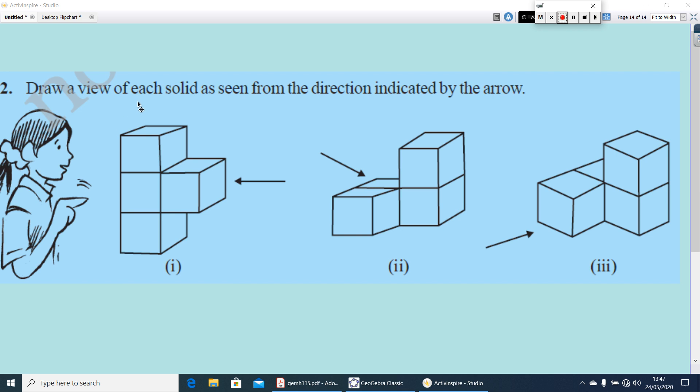Now, draw view of each solid as seen from the direction indicated by the arrow. For this shape, you have to draw the side view. From here, top view. Here also, side view. The view from here, not from top. Again, all side views are there. You have to draw the corresponding figure. That is all for today's class. So, this chapter also finished. Do complete all the works. Have a nice day.